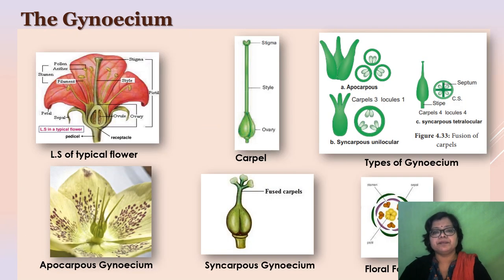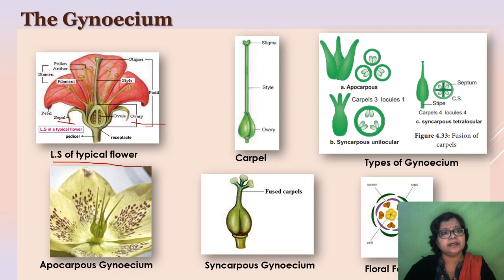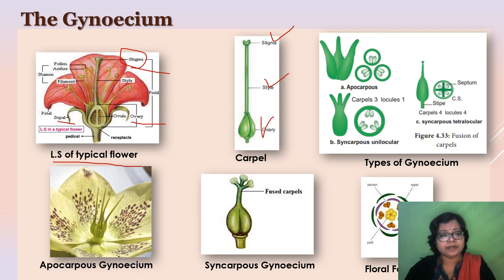This slide shows the different parts of the flower and the types of gynoecium. In the longitudinal section of the flower, the outermost whorl is the calyx with individual segments called sepals, then the corolla with individual segments called petals. Then the androecium consists of stamens — maybe one or many — and then the gynoecium, that is the ovary, style and the sticky stigma. Within the ovary, ovules are present.